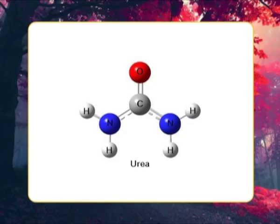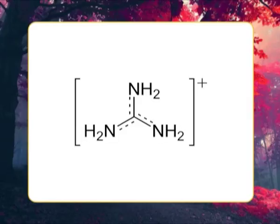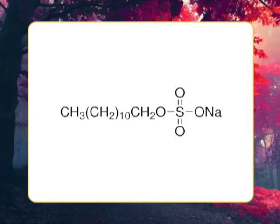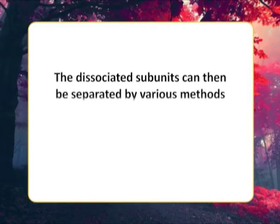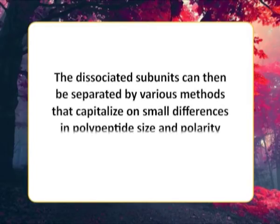A protein's subunit dissociation as well as denaturation occurs under acidic or basic conditions at low salt concentrations, at elevated temperatures, or through the use of denaturing agents such as urea, guanidinium ion, or detergent such as sodium dodecyl sulfate (SDS). The dissociated subunits can then be separated by various methods that capitalize on small differences in polypeptide size and polarity.